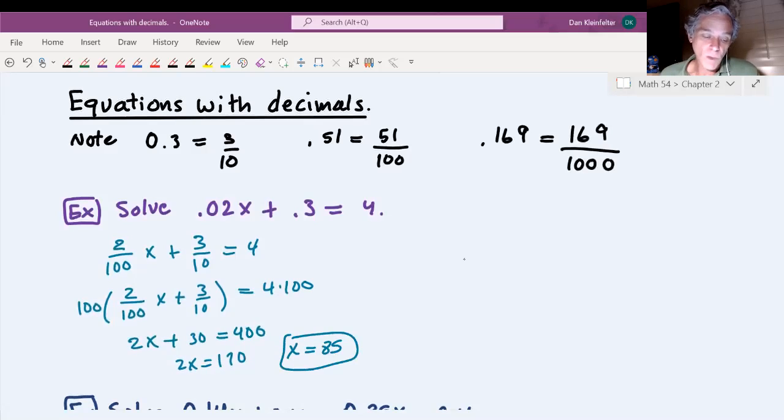So what we did there, we're not going to, in reality, turn this into fractions every time. I just wanted to illustrate how this goes. We multiplied both sides by a hundred based on the fact that there were denominators of 10 and a hundred. So what you do is you look here and say, what is the biggest power of 10 you see in the denominator? And that's a hundred. So we would multiply both sides by a hundred.